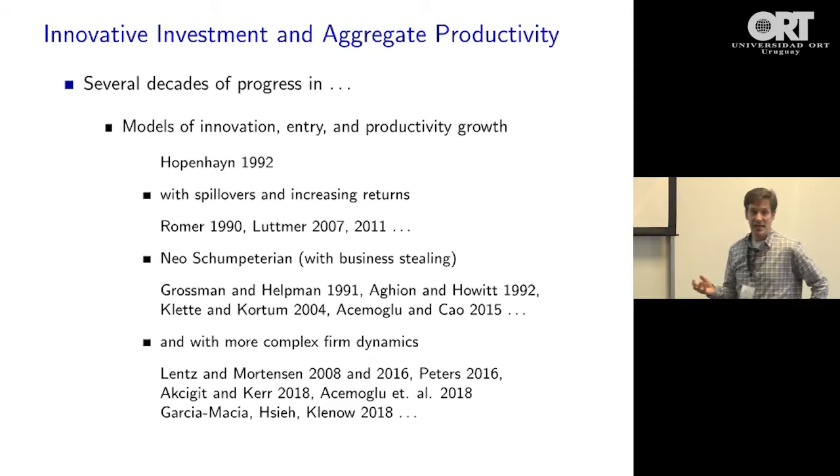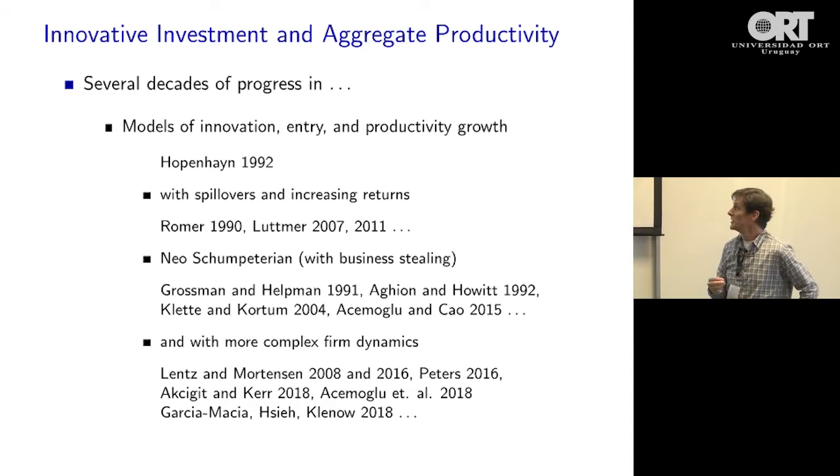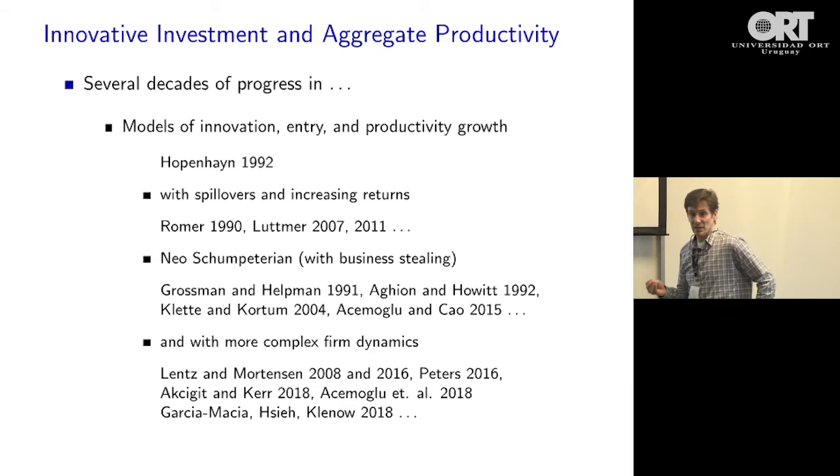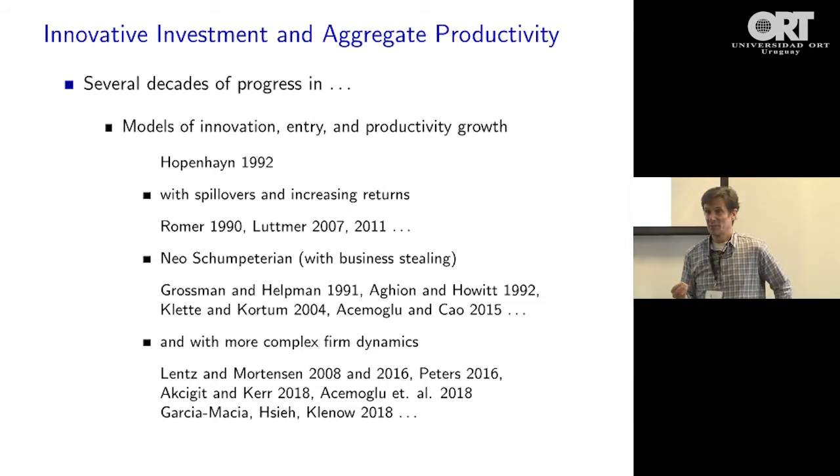There's increasing returns to scale in many of the models. There are spillovers in research. There are decisions about entry by new firms that may be privately optimal but not socially optimal because of business stealing, spillovers, and increasing returns to scale. So we can't fall back on our usual tricks of saying the market tells us the private return, and we'd expect private and social returns to be equated, then use that for growth accounting. We have to do something else — the standard tools don't work.